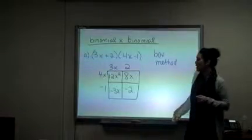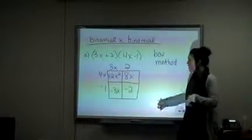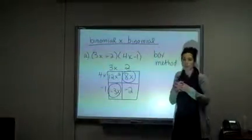You're not quite done. Your last part is to simplify your polynomial. So we're going to take the 8x and the minus 3x, because those are the only two that you can simplify together.